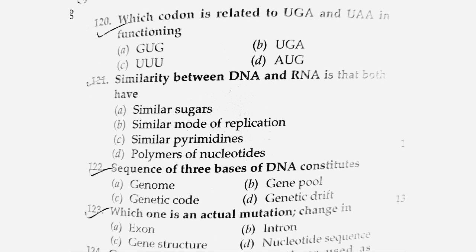Next question: Which codon is related to UGA and UAA in functioning? We need to understand genetic code and the amino acid functions. UGA and UAA are stop codons — also called nonsense codons. Check the Telegram playlist for a detailed revision video on codons.